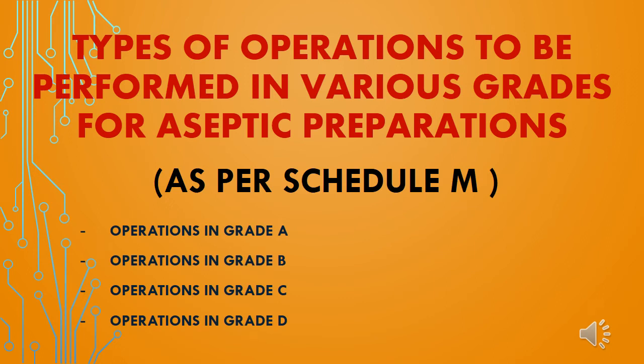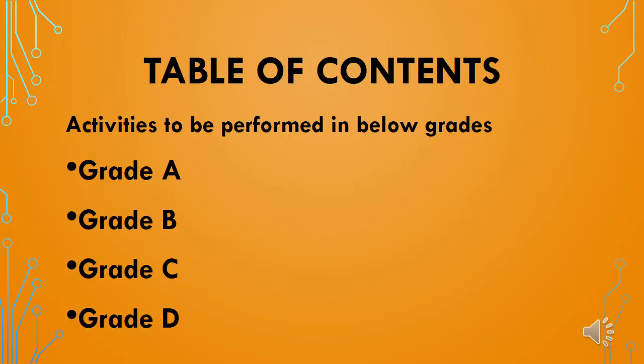Welcome friends to FarmGrow. In this video we will see the types of operations expected in various grades for aseptic areas as per Schedule M. We will see the expected operations to be done in grade A, grade B, grade C and grade D.